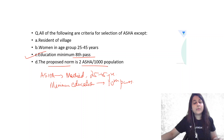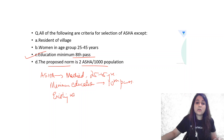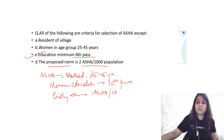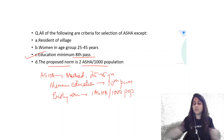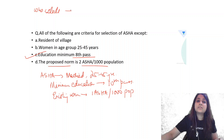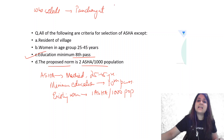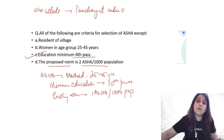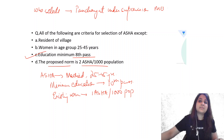The proposed norm is 2 ASHA per 1000 population — absolutely. But what is the existing norm? The existing norm is 1 ASHA per 1000 population, while the proposed norm is 2 ASHA per 1000 population. These are all potential MCQ points.